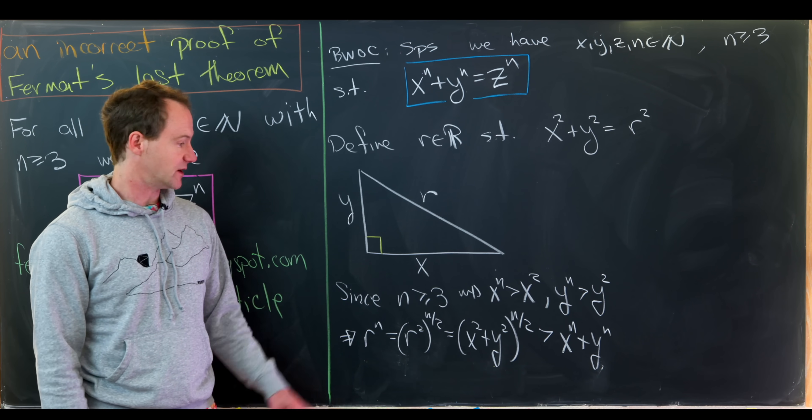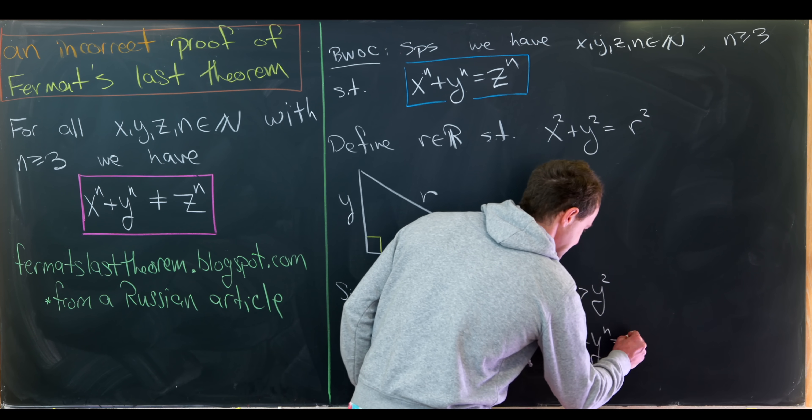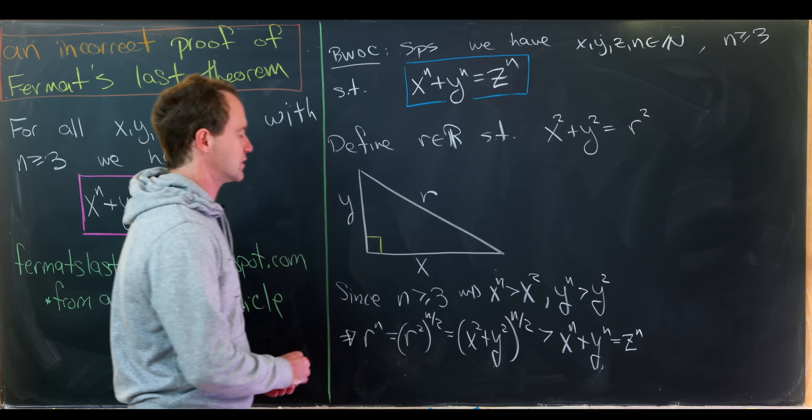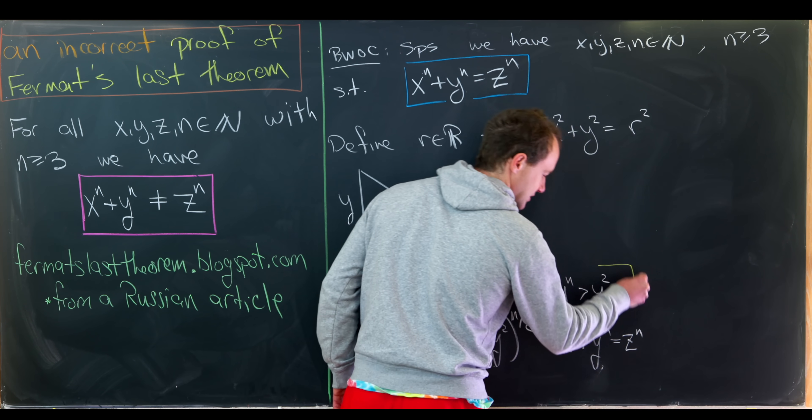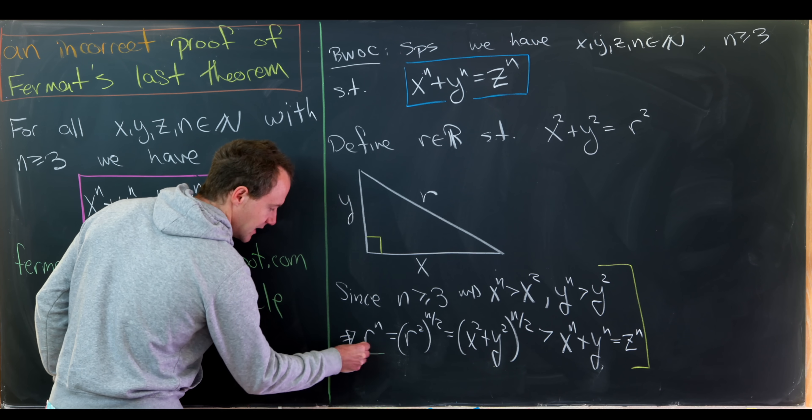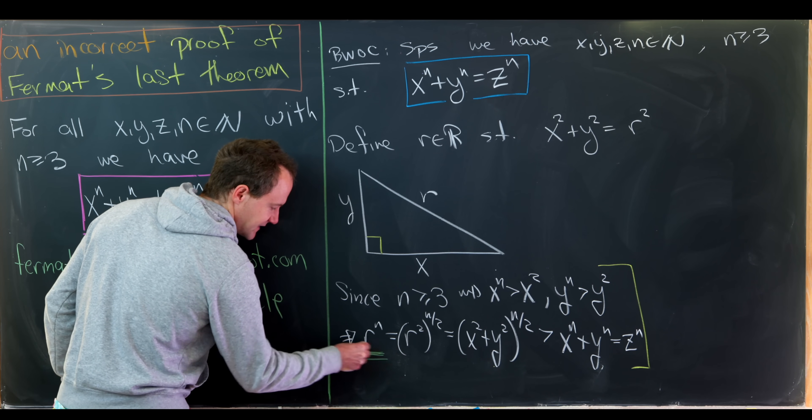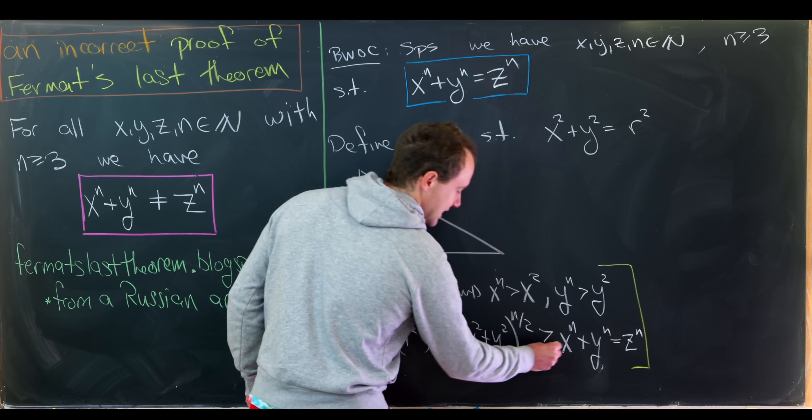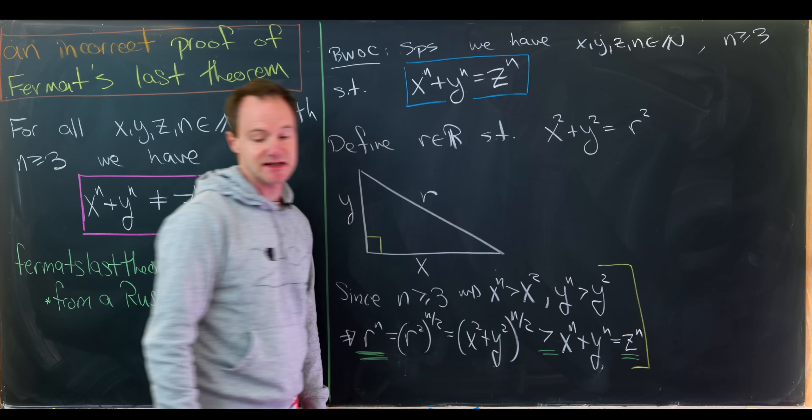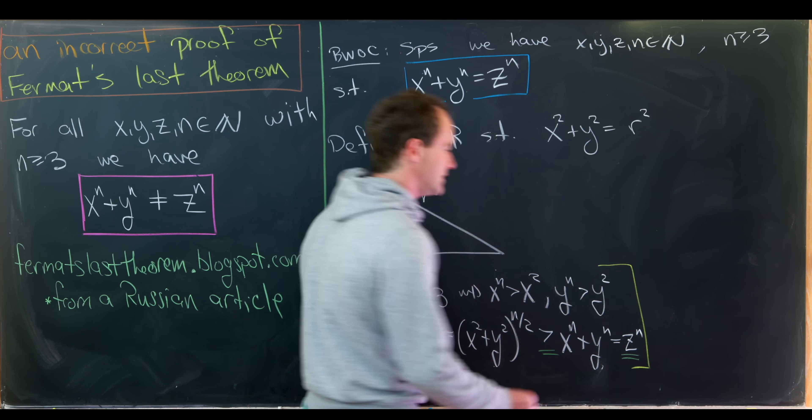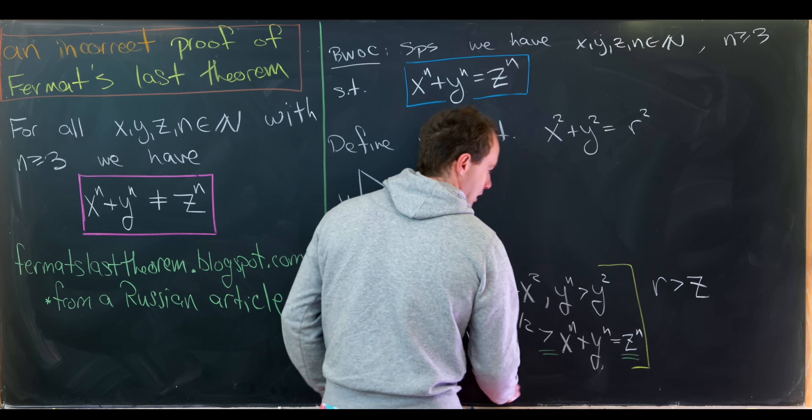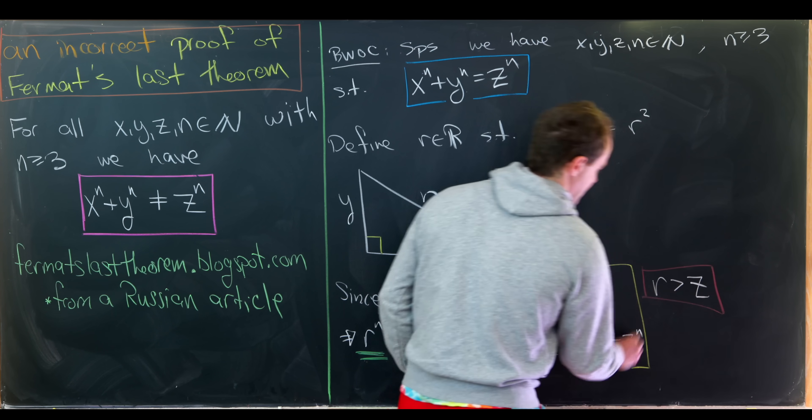So that's good. But now let's recall that x to the n plus y to the n is z to the n by our assumption, which is working towards a contradiction. So let's see what this gives us. Focusing on this extreme left-hand side, r to the n, is bigger than this extreme right-hand side, z to the n. So that means that r is bigger than z. So that's an important takeaway at the moment.